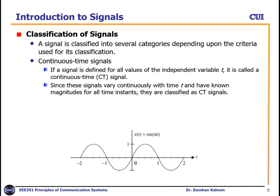Classifications of signal: signals are usually classified into several categories depending upon the criteria used for classification. In this video we will look at continuous time signals. If a signal is defined for all values of the independent variable time t, it is called a continuous time signal.